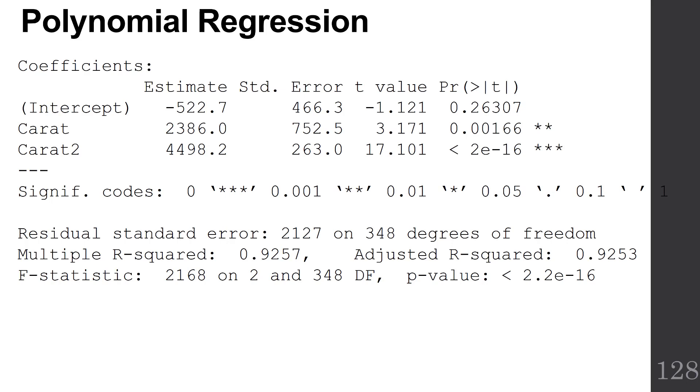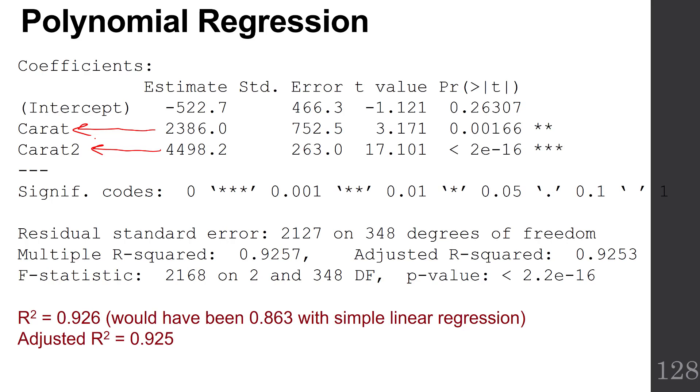I have an intercept, my coefficient on carat, and my coefficient on carat squared. It looks just like any other regression output. Notice that our R² is pretty high at 0.926. It was 0.863 when I ran a simple linear regression with just carat and not carat squared. The adjusted R² is also high at 0.925.